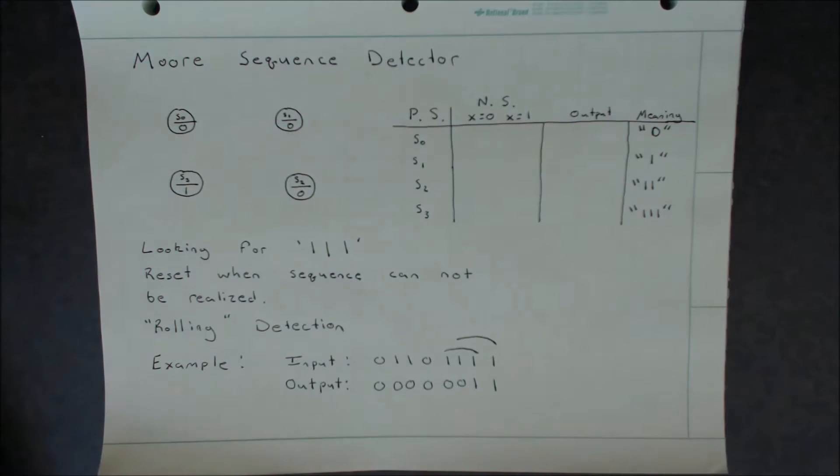Now as a reminder between Moore and Mealy sequential circuits, a Moore sequential circuit has its outputs tied to the states and its inputs only tied to the paths, compared to the Mealy where the outputs and the inputs are tied to the paths.